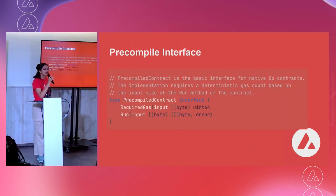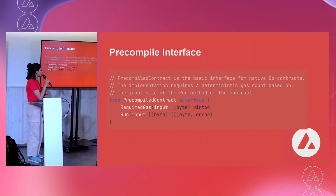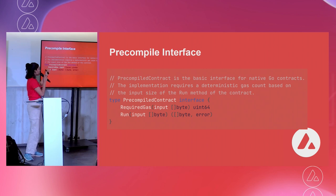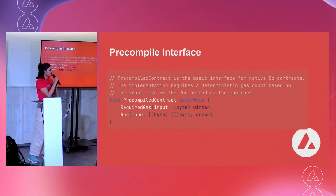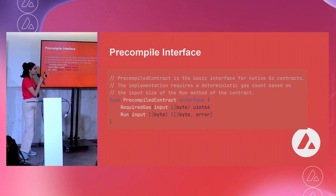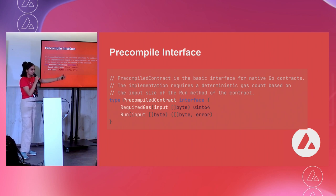This is how the precompiled interface looks. Given an input, we return some number that is the required gas for that precompile. And then we also have the run function, which takes in some input and returns some bytes.